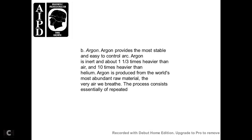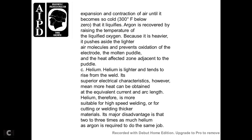B. Argon: Argon provides the most easily controlled arc. Argon is about one and one-third times heavier than air and ten times heavier than helium. Argon is produced from air — the world's most abundant raw material. The process consists essentially of repeated expansion and contraction of air until it becomes so cold, about 350 degrees below zero, that it liquefies. Argon is recovered by raising the temperature of liquid oxygen, and due to its heavier weight, pushes lighter air molecules away to prevent oxidation of the electrode and molten puddle and the heat-affected zone adjacent to the puddle.